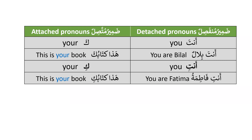Now, if you are talking to a singular feminine, we say anti. The change that has taken place: it was fathah for the masculine, and now for the feminine we have kasra. So we have anti — 'you' — and similarly the attached pronoun will be ki, which also takes kasra. For example, anti Fatimatu — 'you are Fatima'; and hadha kitabuki — 'this is your book.' The only difference is just the vowel sign: fathah for second person masculine singular, and kasra for second person feminine singular.